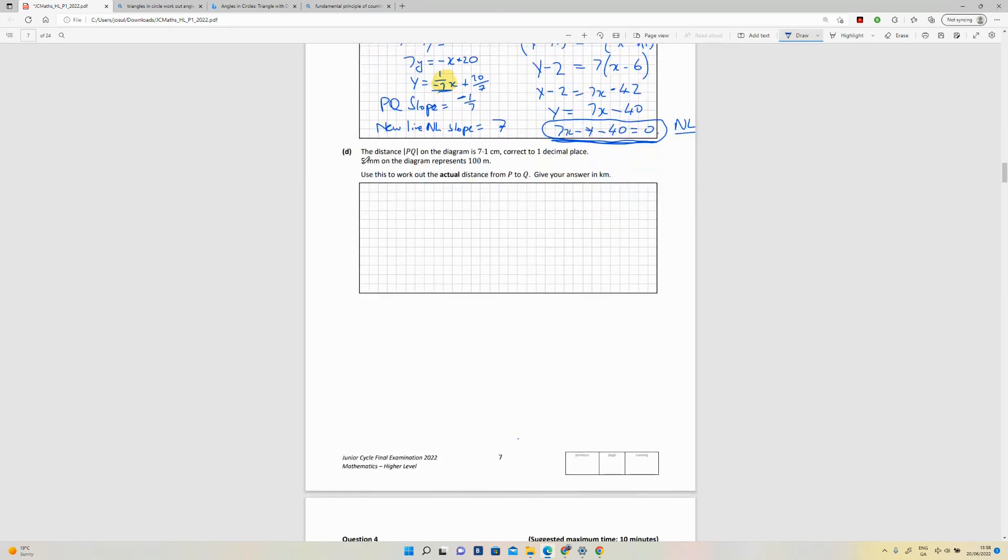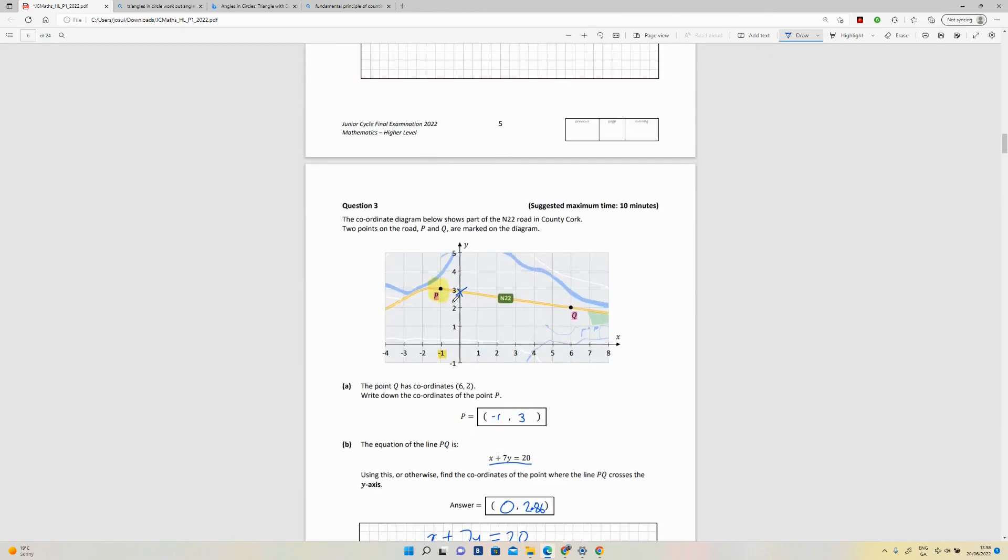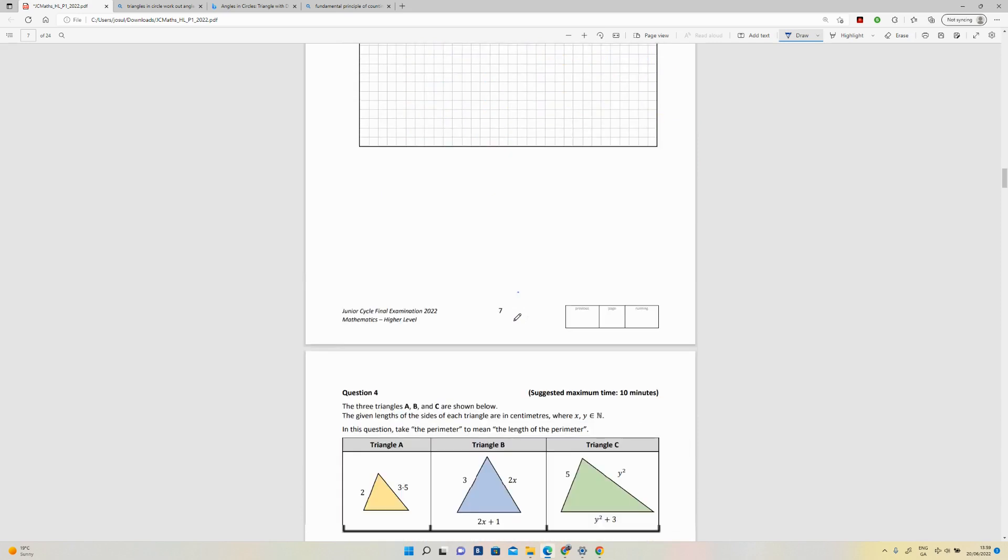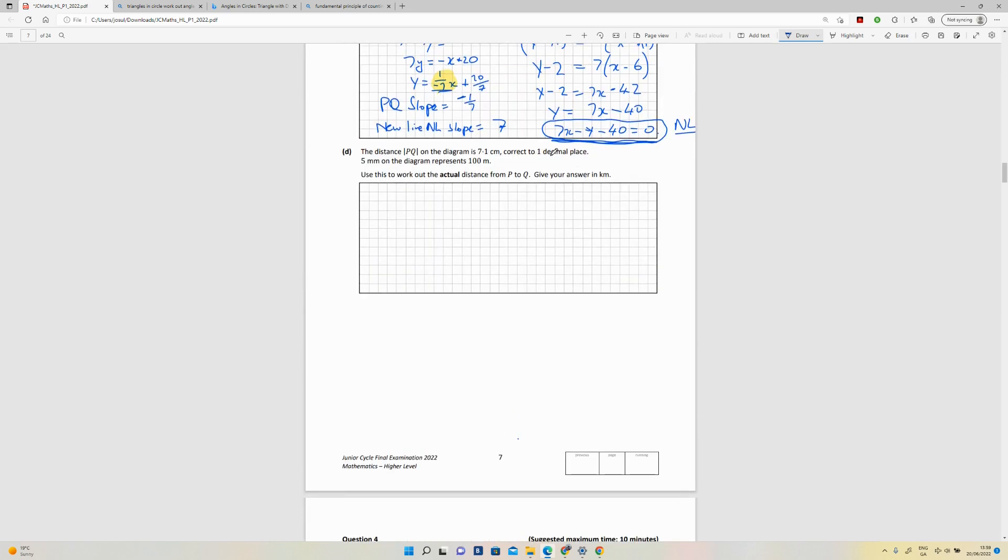Last part, D: The distance of the line PQ on the diagram is 7.1 centimeters, correct to one decimal place. Five millimeters on the diagram represents 100 meters. So let's just go back and look at it. So PQ, that line is 7.1, correct to one decimal place. Five millimeters on the diagram represents 100 meters.